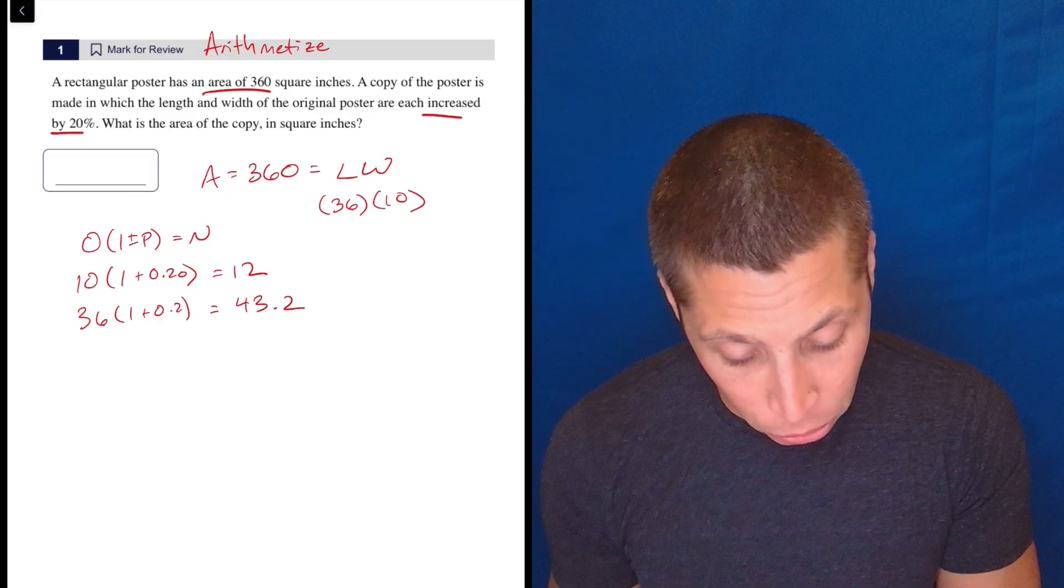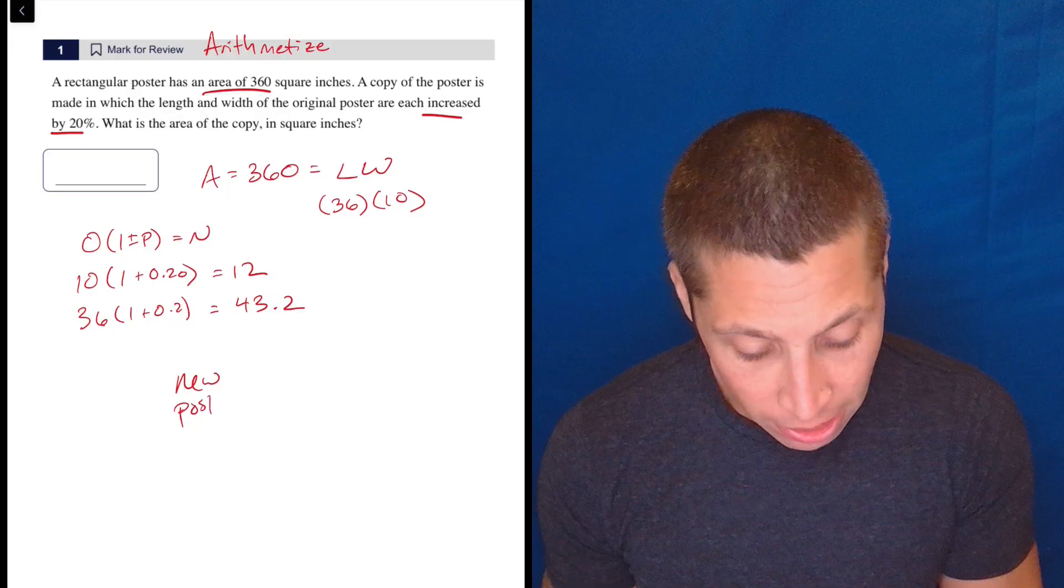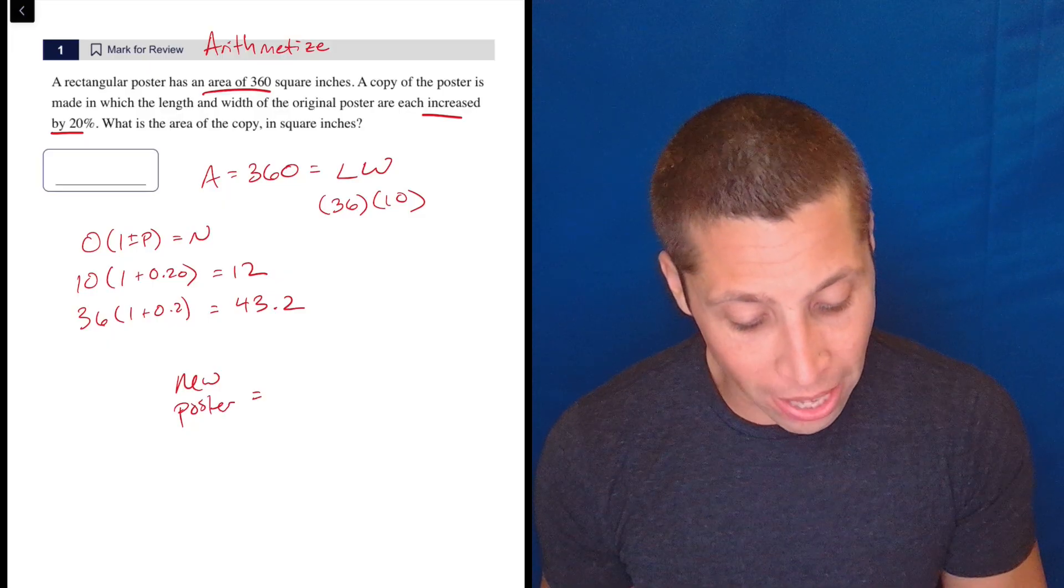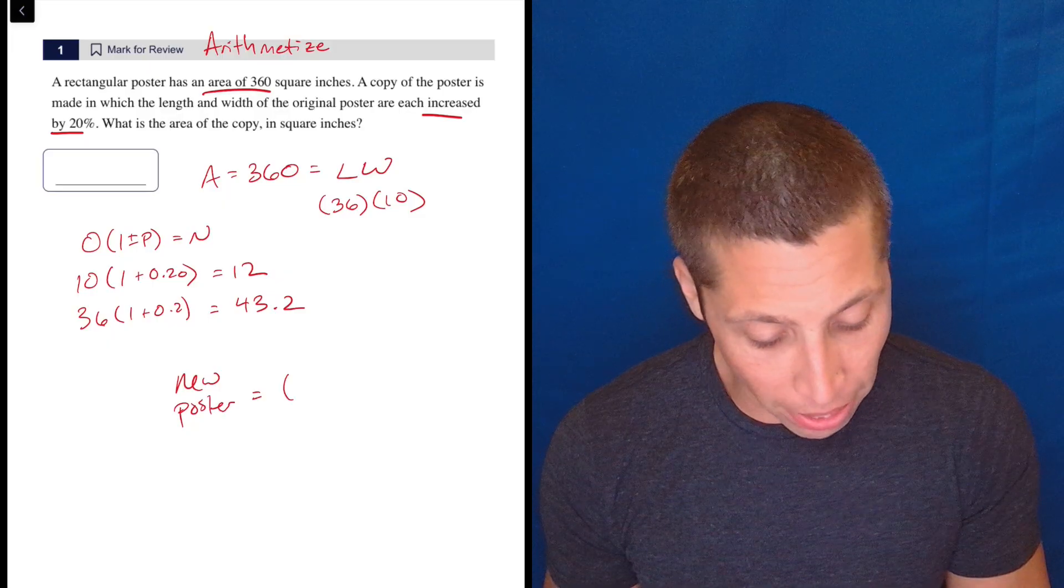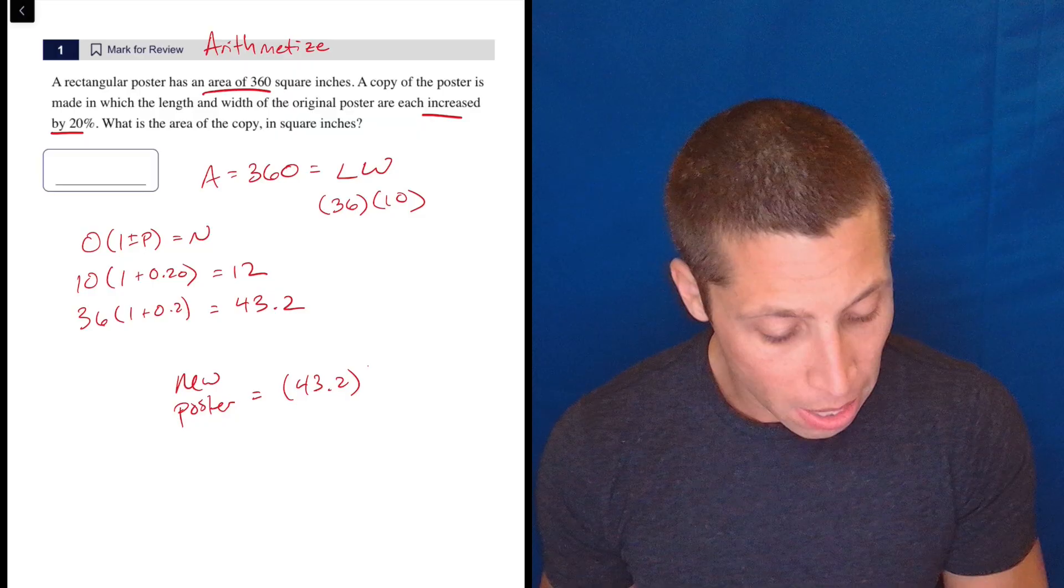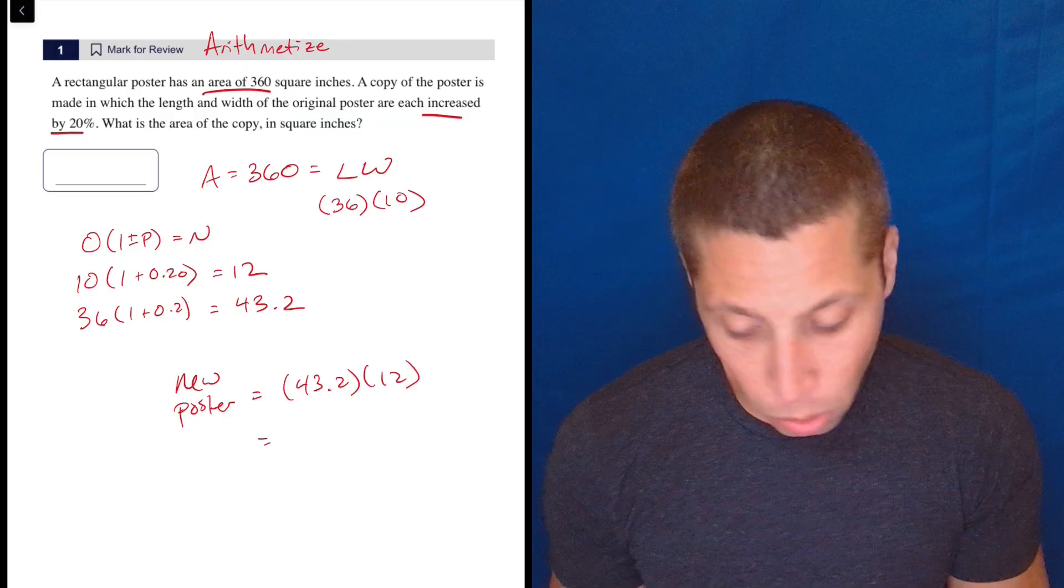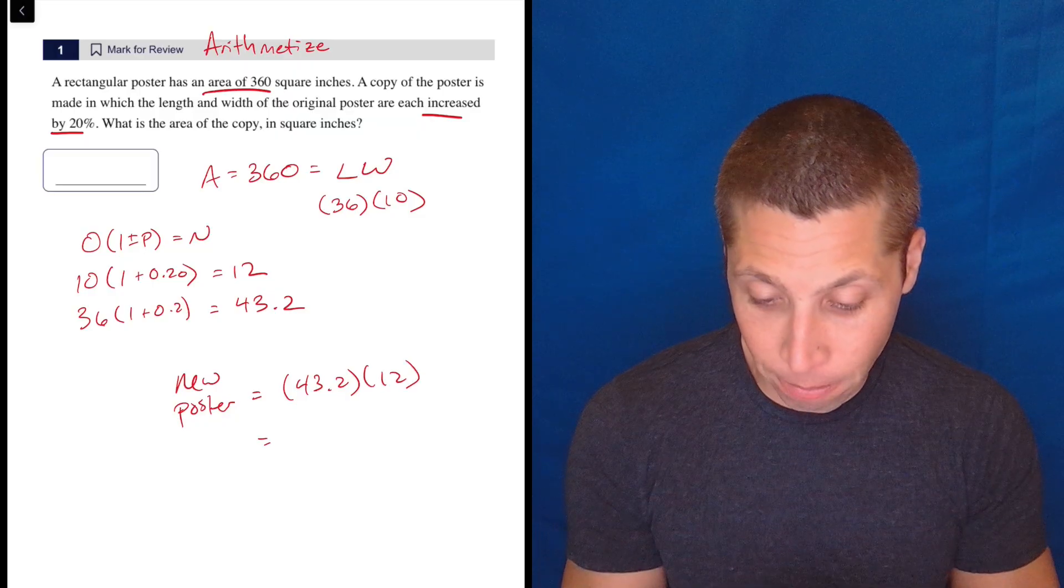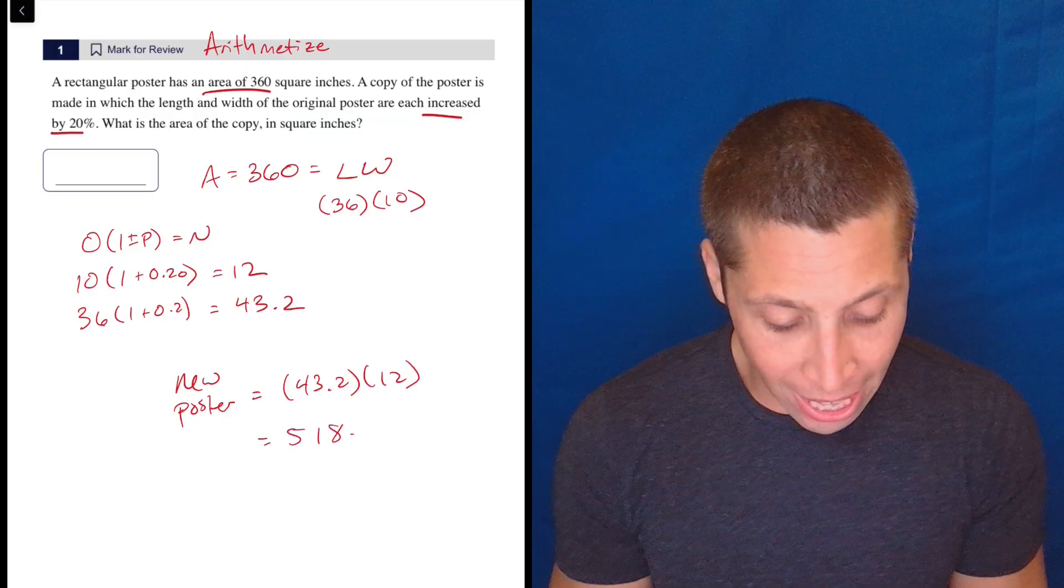Now I have a new poster. So the new poster still is a rectangle. So its area is still length times width. My length is 43.2. My width is 12. So what do those multiply to? Let's find out.